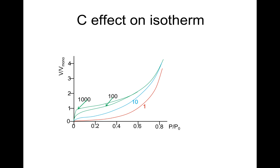Let us now look at the effect of C on the isotherms. If we plot V over V-monolayer against the relative pressure P/P0, we find that when C equals 1, we get a curve similar to types 3 and 5, where the interaction between the adsorbate and the adsorbent is very low. When we move to C equals 10, that improves a bit and we can see a sort of hunch.